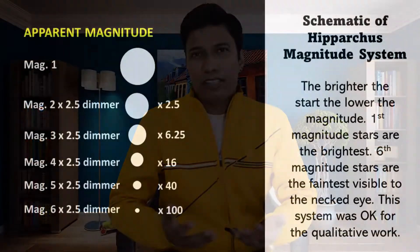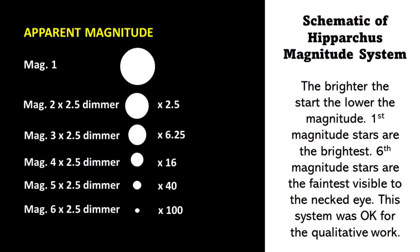When in the early 19th century instruments became available to measure the exact brightness of different stars, it became clear that in Hipparchus's magnitude system the stars in a particular class are about 2.5 times brighter than the stars in the next magnitude class.